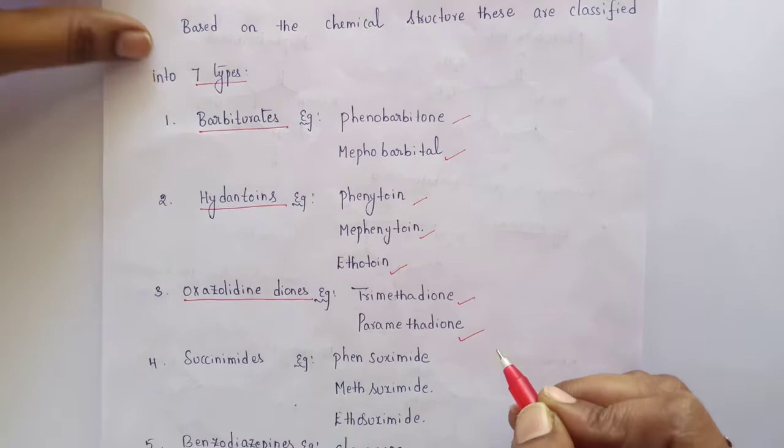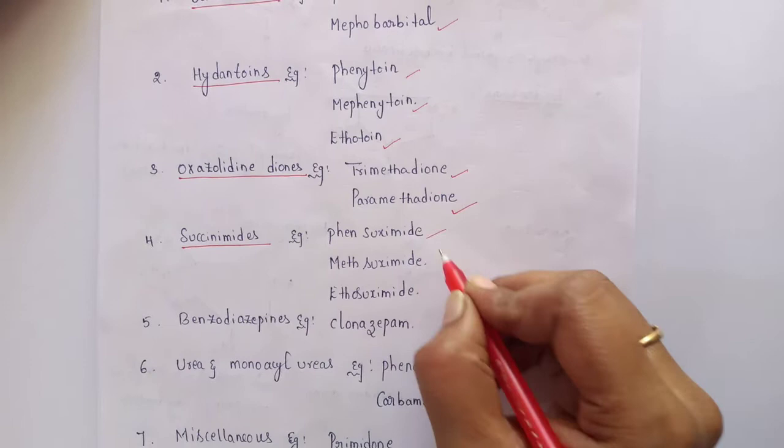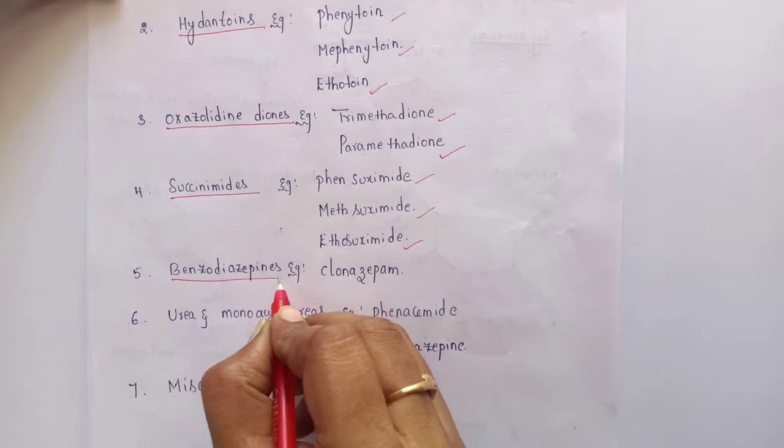Three examples of succinimides are phensuximide, methsuximide, and ethosuximide. The 5th class of drugs are benzodiazepines, which are also discussed in hypnotics and sedatives. The example of drug is clonazepam.